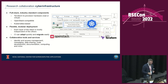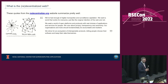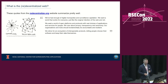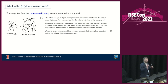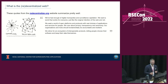Now I'd like to explain what I mean by the redecentralized web and how it influences our design principles. Quotes from redecentralized.org summarize it well: 'We've had enough of digital monopolies and surveillance capitalism. We want a world that works for everyone, just like the original intention of the web.' This 're' prefix indicates a return to the partially idealized early worldwide web, when anybody could have a website and reach anybody in the world.